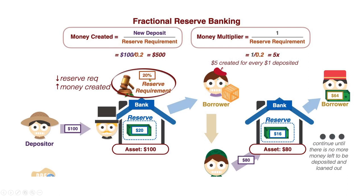At a 20% reserve requirement, a depositor puts in $100. The bank has to keep back 20%, which is $20. Another person borrows — they only keep back 20% of the $100 they have, so they borrow out $80. The reserve becomes $16 of the $80 that came in. They continue to do that over and over until the reserve requirement doesn't allow them to anymore. At 20% it's 5x, at 10% it's 10x.